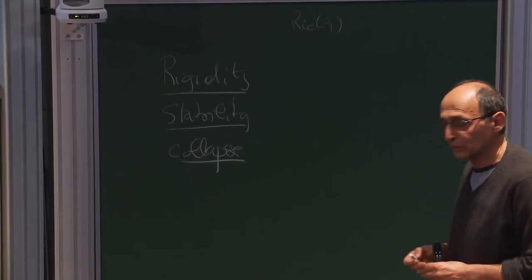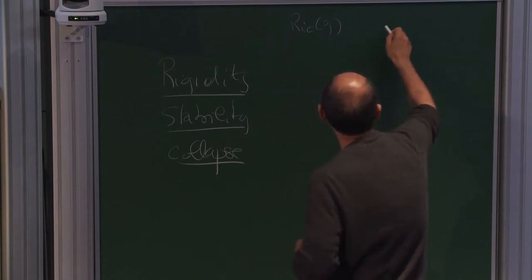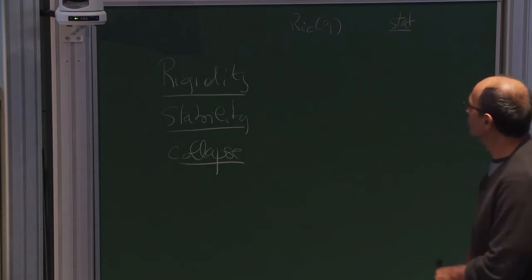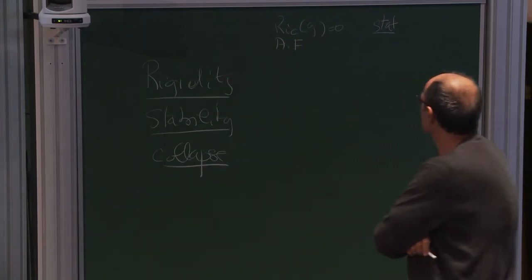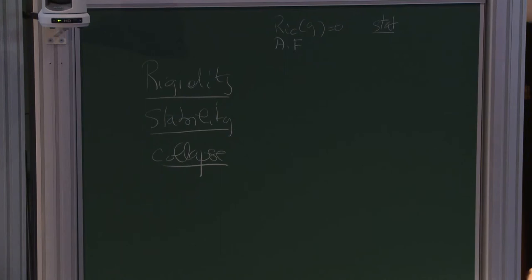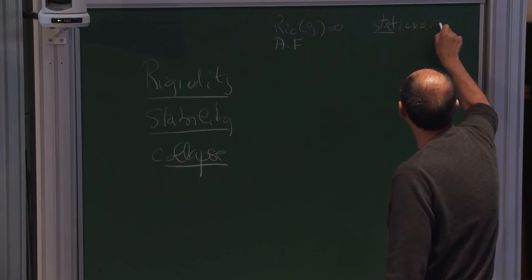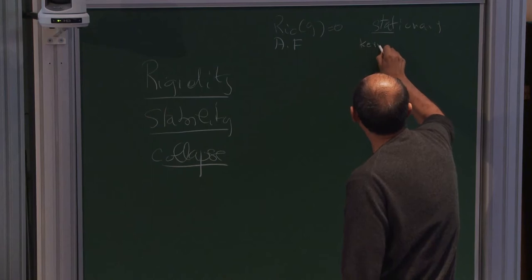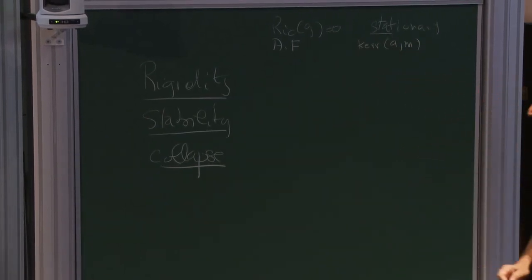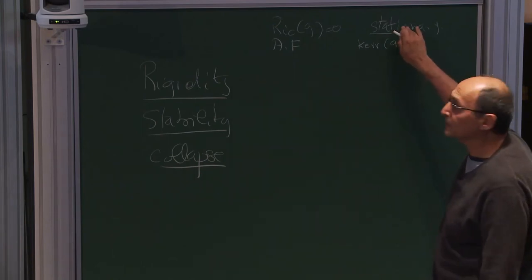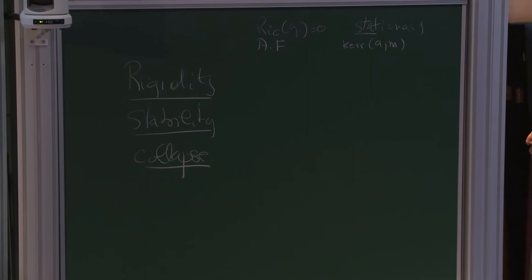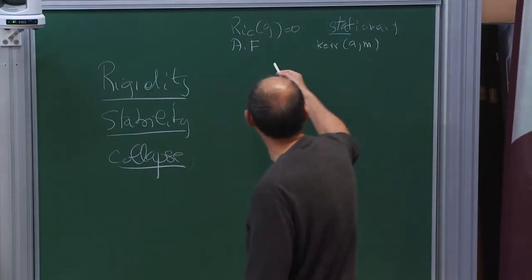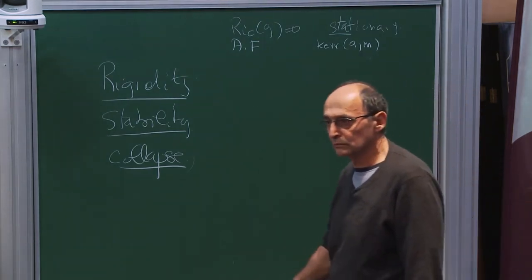Rigidity is a statement about stationary solutions of the Einstein equations in the asymptotically flat regime. We look at stationary solutions and find the explicit Kerr family. The question is whether there are other stationary solutions besides the Kerr family. Stability concerns the stability of Kerr relative to small perturbations, and collapse is the issue of how these stationary solutions form through collapse mechanisms.